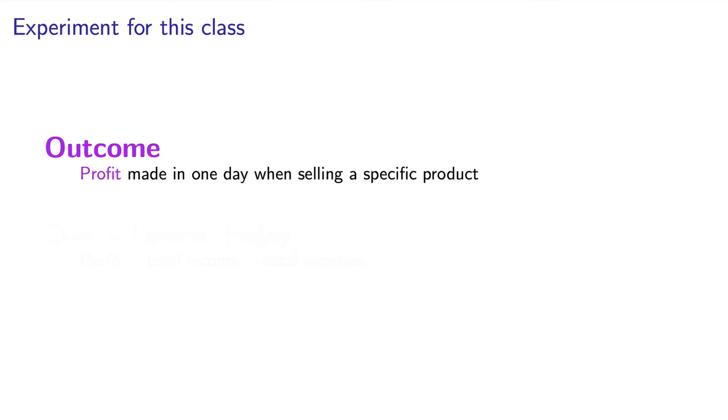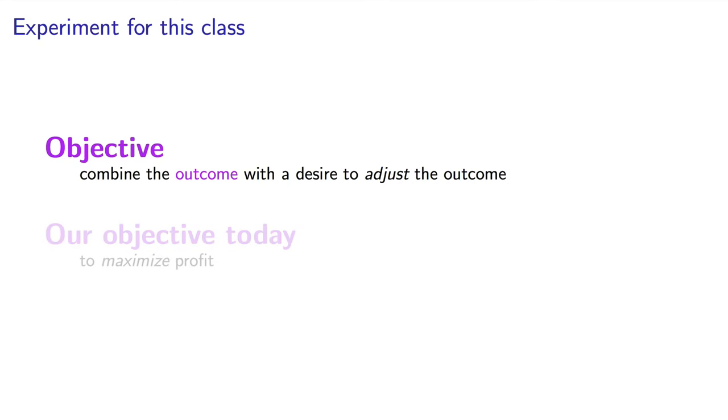The experiment I'm going to describe here has one outcome: the profit made in one day when selling a specific type of product in a store. Remember that profit equals income minus expenses. So when the store owner calculates the total income and then subtracts the total expenses, that number is called the profit and is the outcome of our experiment. The objective of this experiment is to increase profit.